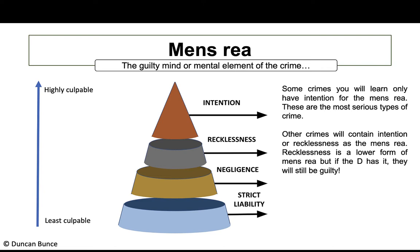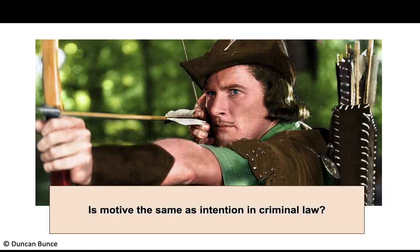Below recklessness we have negligence, which links to involuntary manslaughter and gross negligence manslaughter. At the bottom is strict liability — a future topic — where the defendant can be liable for a crime having only committed the actus reus.